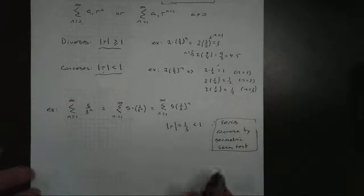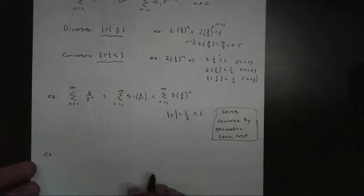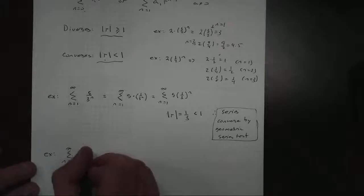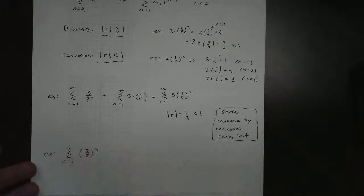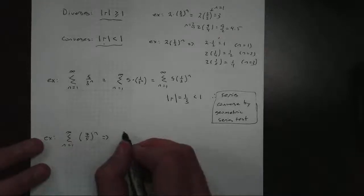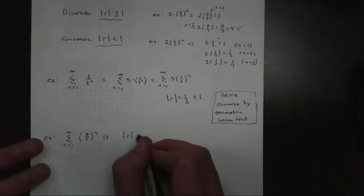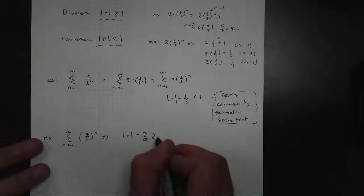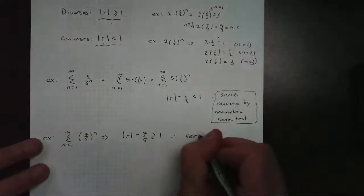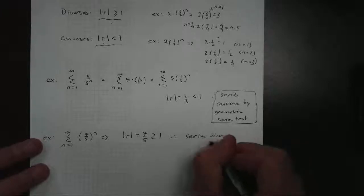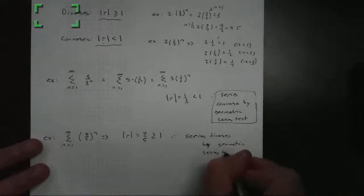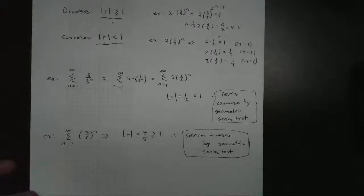Now let's look at an example where r is greater than 1. Consider the series from n = 1 to infinity of (7/5)^n. This is already in geometric form. The absolute value of r, which is 7/5, is greater than or equal to 1. So the series diverges by the geometric series test.